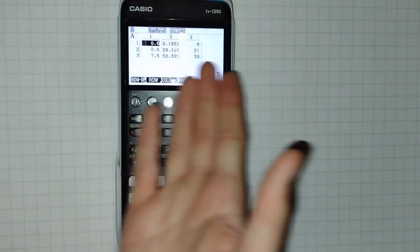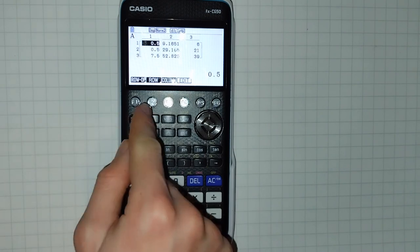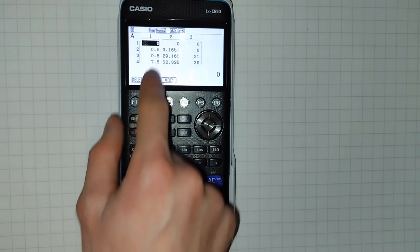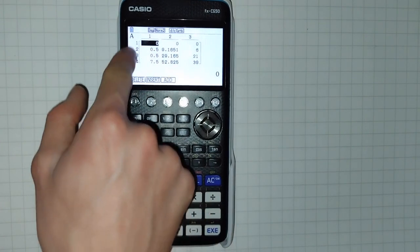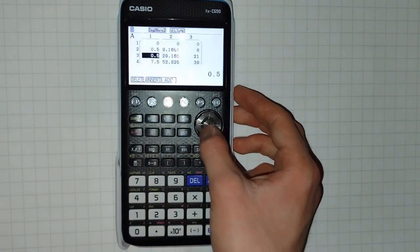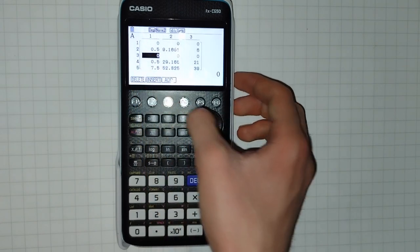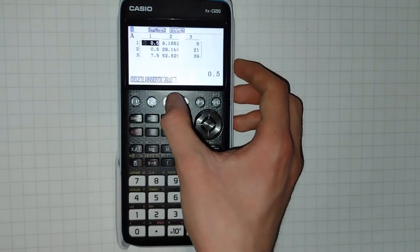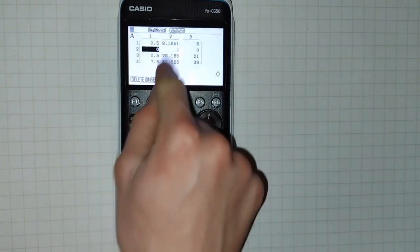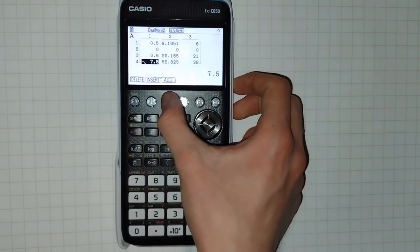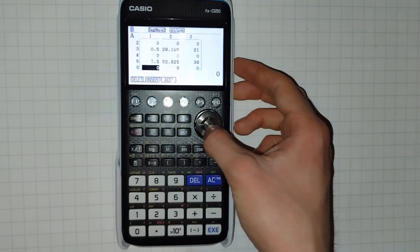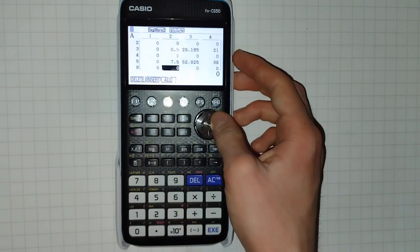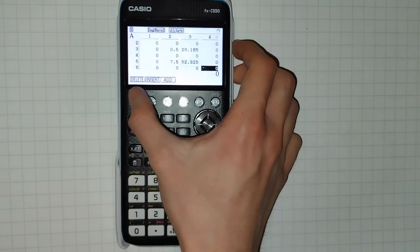Now let's say we've got a 3x3 matrix but we realize we want to add another row. Well, by pressing F2, we can then insert another row, and this inserts it before the row we've got currently selected. And you can delete rows, or you can add rows with F3, and this puts it after the row currently selected. You can do the same thing with columns: insert, and add, and delete.